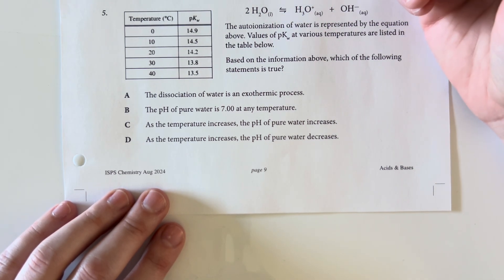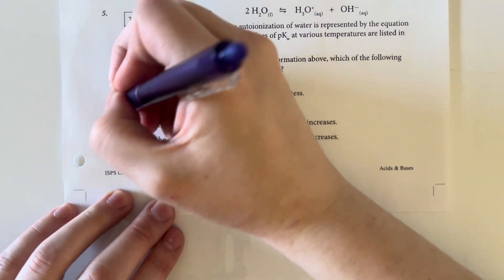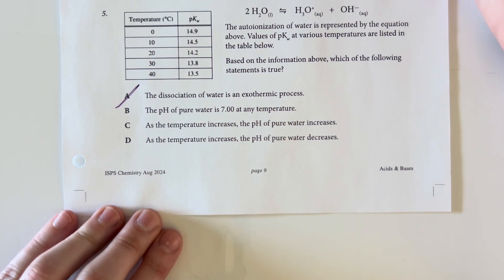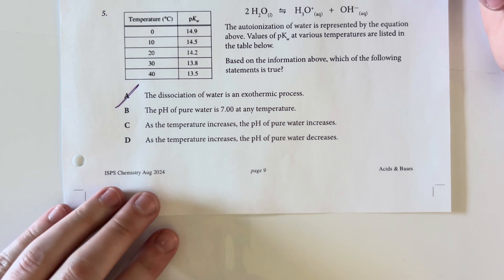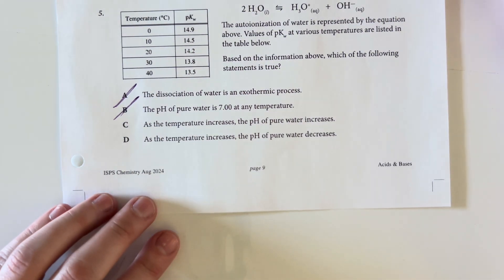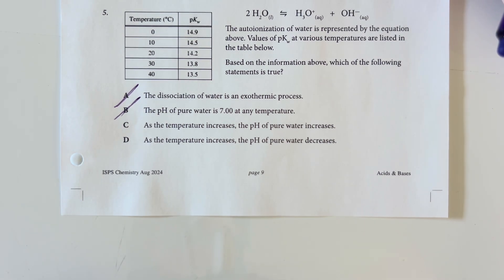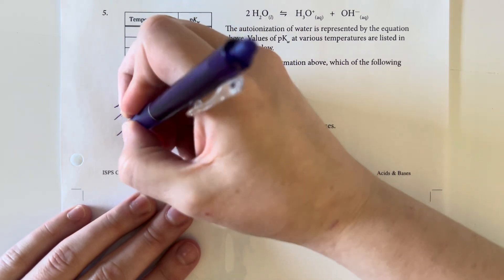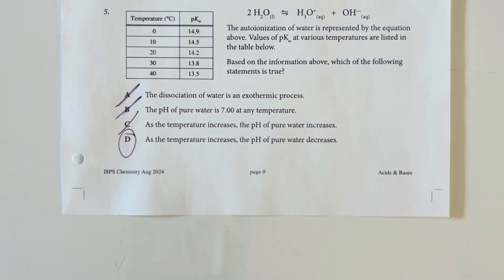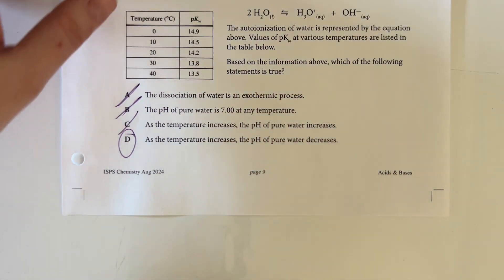So A says dissociation of water is an exothermic process. No, it's actually an endothermic process. We need to add temperature in order to dissociate the water into its constituent ions. The pH of pure water is 7 at any temperature. This is not true. We get more acidic as we heat up. As temperature increases the pH of water increases. That would make the water more basic. It becomes more acidic. And so answer choice D is going to be my answer.